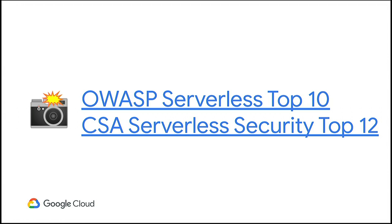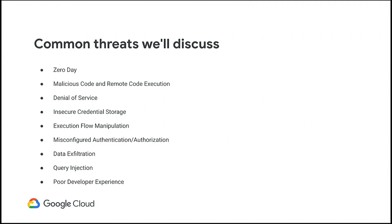This talk is modeled off a couple of top-10 threat lists we see in serverless: the OWASP Serverless Top 10 and the Cloud Security Group Serverless Security Top 12. There's a lot of overlap. We'll go through things like malicious code and where you might get it, potential for remote code execution, denials of service, storing credentials insecurely, and even the idea of poor developer experience. If your developers have a manual toolchain and are copying things around, there's a much higher chance something goes wrong.